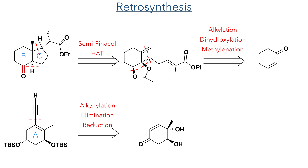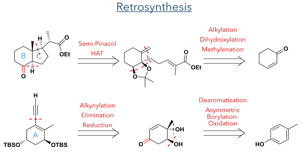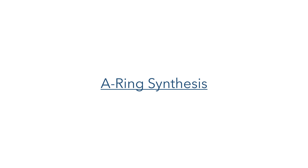The A ring fragment, on the other hand, could be constructed using a conjugate alkyne addition, elimination and reduction strategy of an enone-dione precursor. This precursor could be constructed using the dearomatisation of creosol together with an asymmetric borylation oxidation sequence. So let's start with this A ring synthesis.